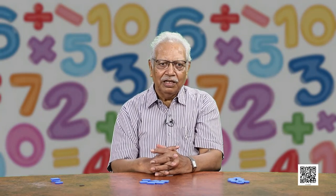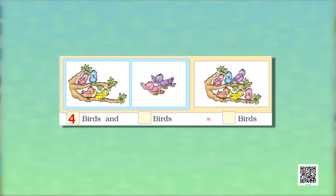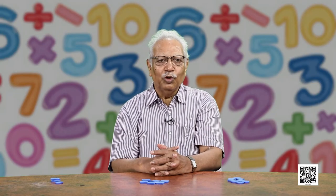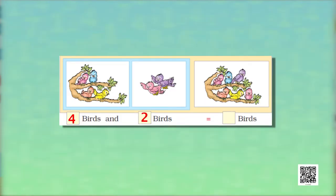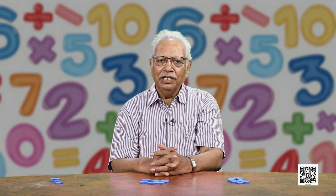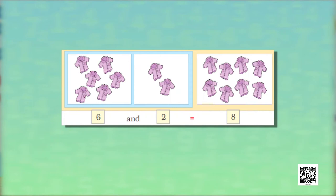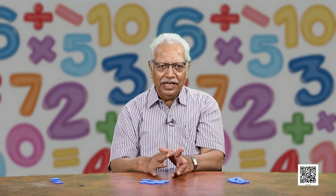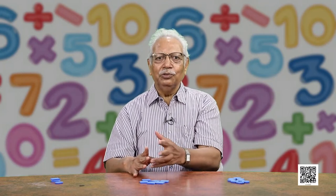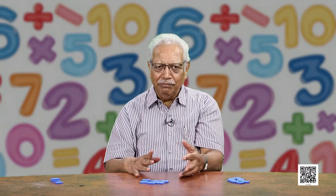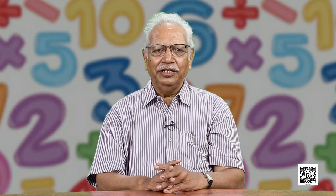Let us take another example of birds. These are 4 birds and 2 more birds fly in. So they add up to — or are equal to — how many birds? 6 birds. Now we are using a sign of equality to show the addition of 2 numbers. Similarly, these are 6 shirts and 2 shirts. We put them together and it becomes 1, 2, 3, 4, 5, 6, 7, 8. So we can say that 6 and 2 are equal to 8. We have learnt about adding 2 numbers up to 9.